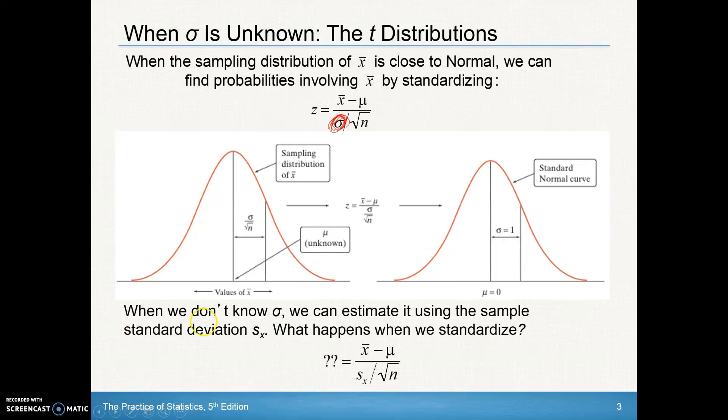But again, we don't know that sigma. We don't know what that sigma is many, many times. Our best estimate of that would be the sample standard deviation of those x's. So the question is what happens when we standardize when we use this value, when we have this as part of our standard error on the bottom of our z-score rather than the population standard deviation divided by the square root of n.